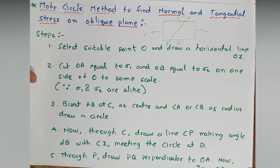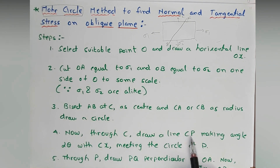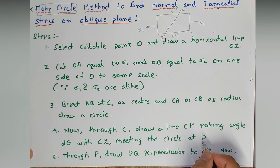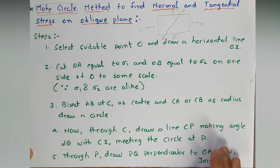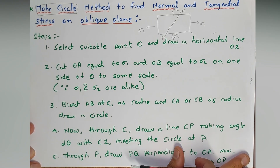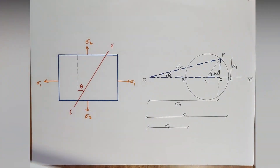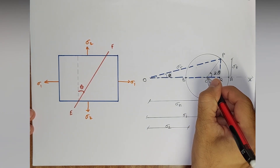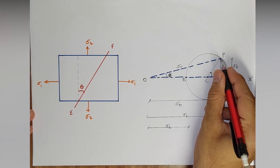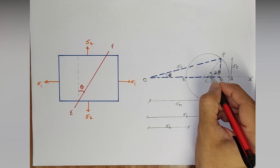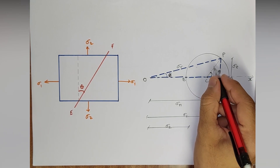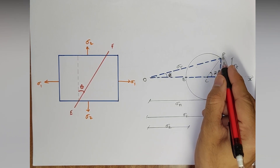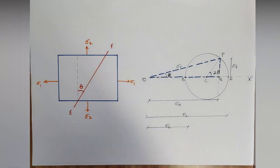Step 4 — through C, draw a line CP making angle 2θ with CX, meeting the circle at point P. Through C I have drawn a line at angle 2θ intersecting the circle at point P.